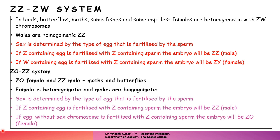These are the different types of sex determination that come under the chromosomal type. In the next session, we will be discussing genic balance theory, some unusual types of sex determination seen in Drosophila, the honeybee colony, environmental sex determination, and hormonal sex determination. With this, we conclude this particular section. Thanks for listening.